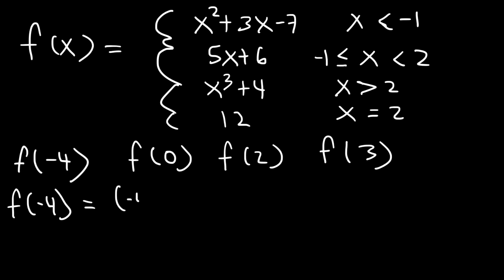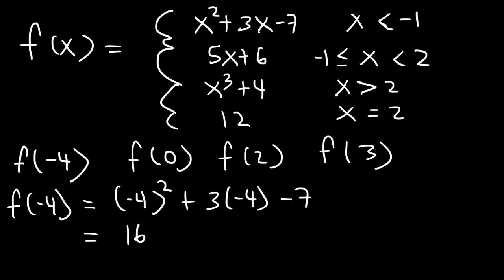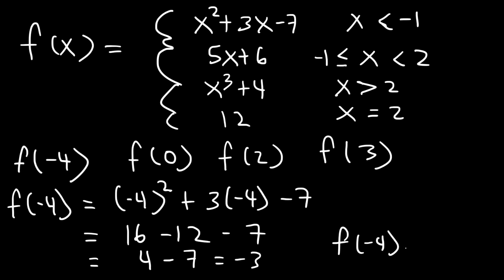So this is going to be negative 4 squared plus 3 times negative 4 minus 7. Negative 4 squared, or negative 4 times negative 4, is 16. 3 times negative 4 is negative 12. 16 minus 12 is 4, and 4 minus 7 is negative 3. So f of negative 4 is equal to negative 3.